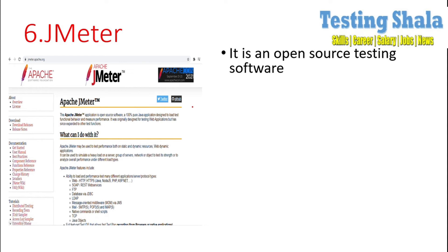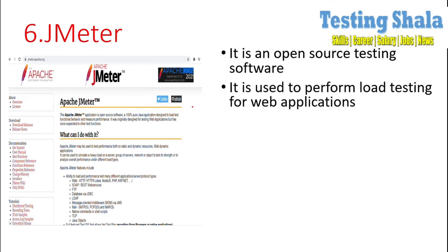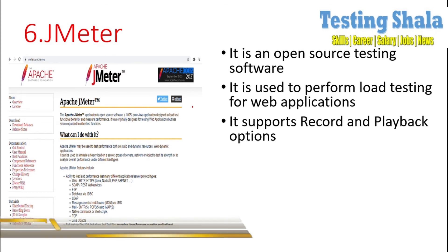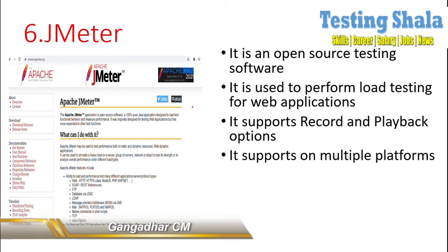The sixth tool is JMeter. JMeter is again an open source testing software used to perform load testing for a web application. It supports record and playback options as well. It is developed on top of Java, because of which it supports multiple platforms. It provides better test results in a visual format.